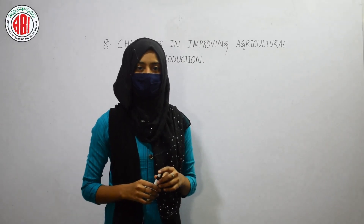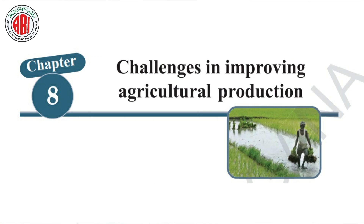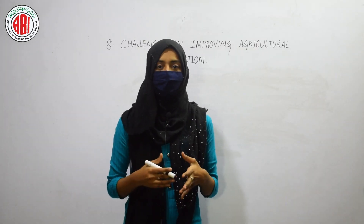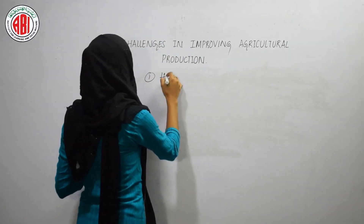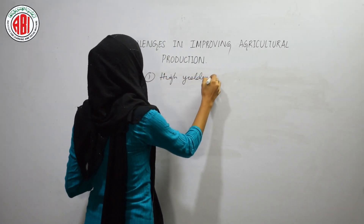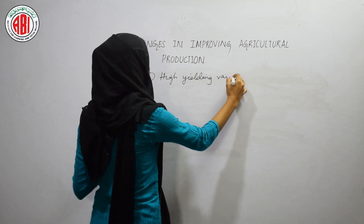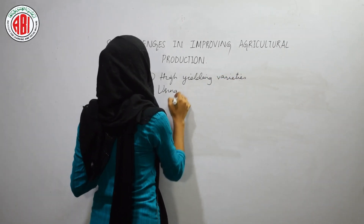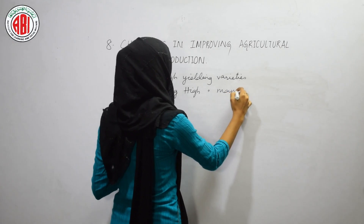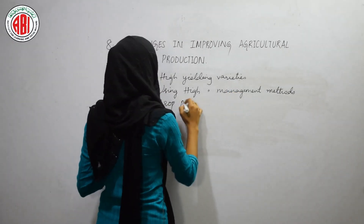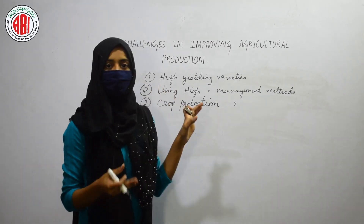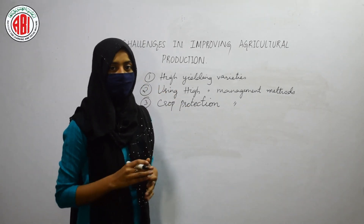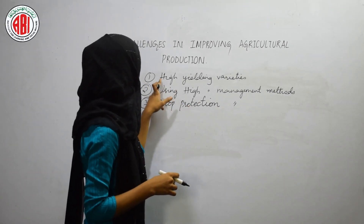Hi everyone, this is Ramana Ali. Welcome back to my class. Challenges in improving agricultural production — to get the high yield, there are certain methods. The first one is developing high yielding varieties, the second is using high yielding management methods, and the third is crop protection management. These are the things that need to be followed in order to get high yield.